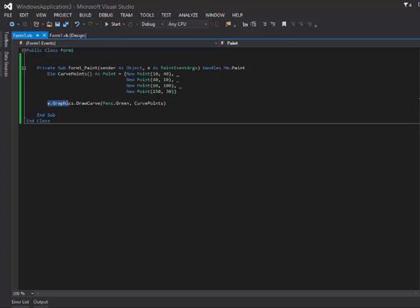you can call e.Graphics.DrawCurve, and then put pens and whatever color you choose. You can put yellow, green, whatever color you like. And then I'm calling the collection of points that I already declared on top. And let's debug it and see how it looks like.